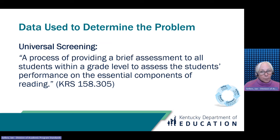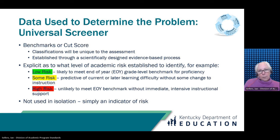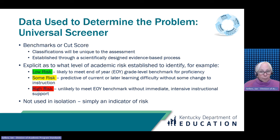Data used to determine the target area of concern start with the universal screening, which is defined in statute as a process of providing brief assessment to all students within a grade level to assess performance on the essential components of reading. The universal screening is like a well-child checkup, a blood pressure check, or a temperature check — the data give us information about the health of the school, grade, class, and individual students. Scores on the universal screener are typically reported as benchmark or cut scores, developed through research to identify what score a student needs to earn in the fall or winter to have a strong likelihood of meeting grade level proficiency in spring.